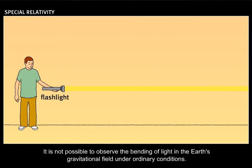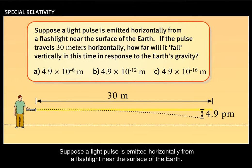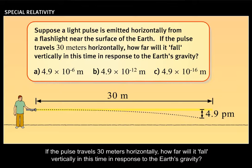It is not possible to observe the bending of light in the earth's gravitational field under ordinary conditions. Perhaps an example will convince you of this. Suppose a light pulse is emitted horizontally from a flashlight near the surface of the earth. If the pulse travels 30 meters horizontally, how far will it fall vertically in this time in response to the earth's gravity?